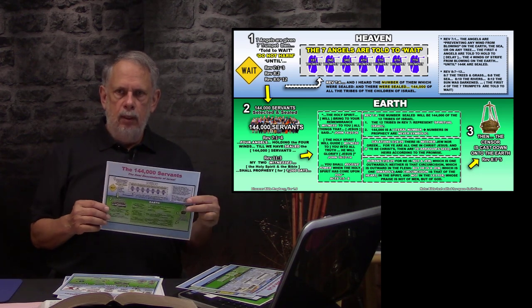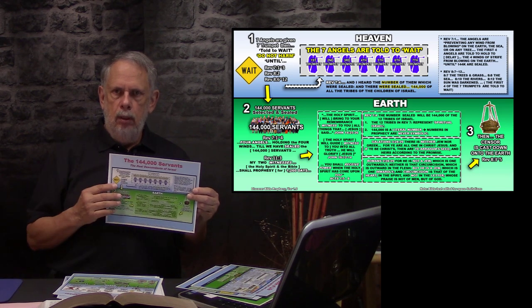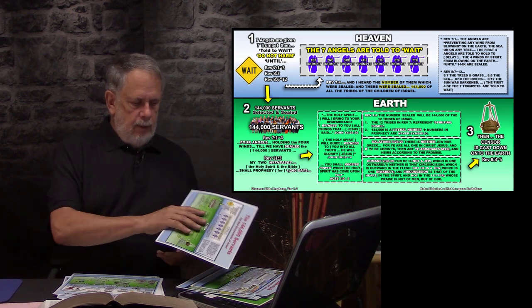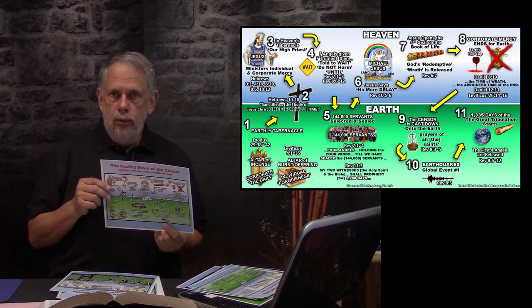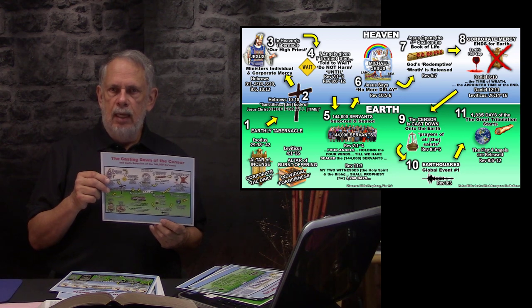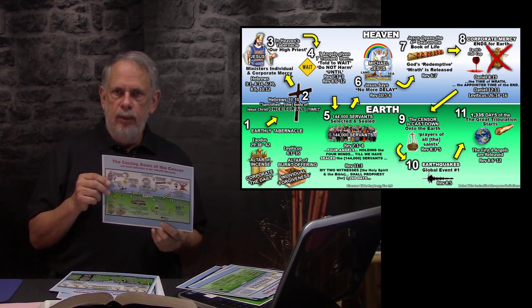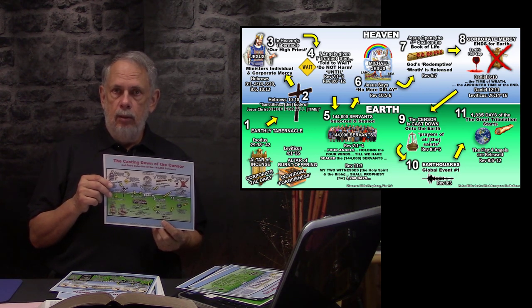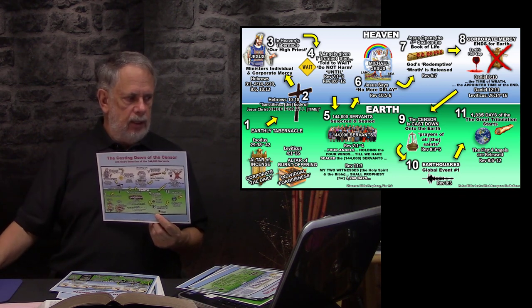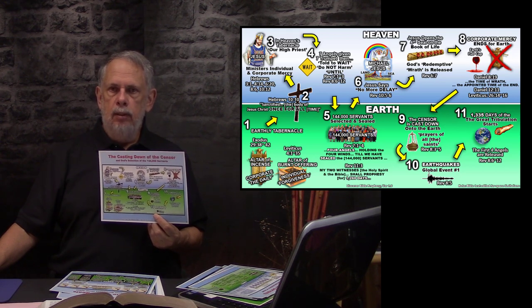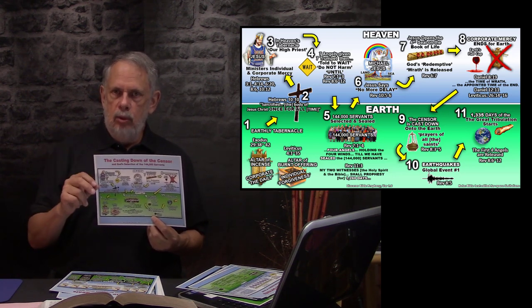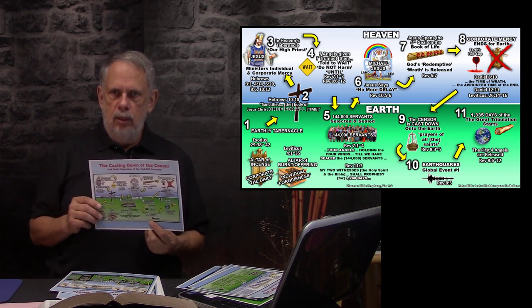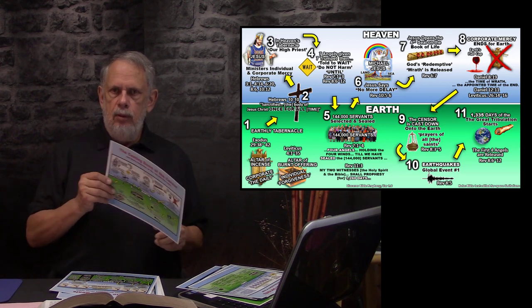You can see a theme I'm doing here — covering a general topic in each storyboard. The next one is a different topic: the casting down of the censer. Many people don't have a clue what I'm talking about when I say this. The casting down of the censer is a very, very important upcoming event — it will start the Great Tribulation. We have 11 points, starting with the earthly tabernacle, going way back into the Old Testament to learn what the censer was back then and how it affects our future. This is another wonderful study that very few people ever get into.